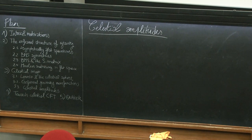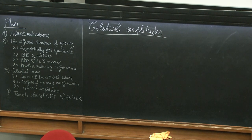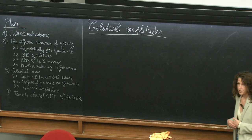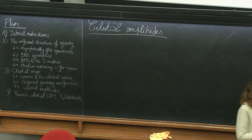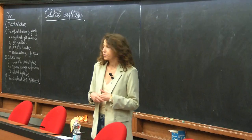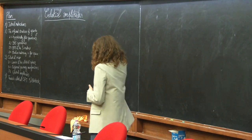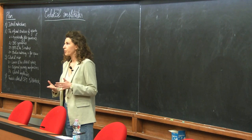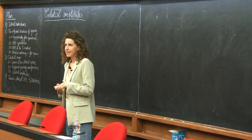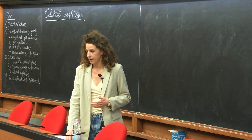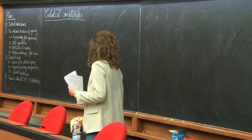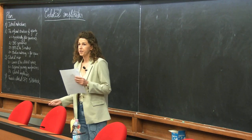Celestial amplitudes — I will present them as the observables of quantum gravity in flat spacetimes, which live on the conformal sphere at the boundary of flat spacetime, which is called the celestial sphere. Celestial amplitudes are the root of a recent program called celestial holography, which has been developing very fast in recent years.